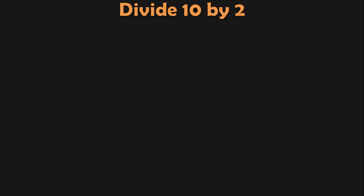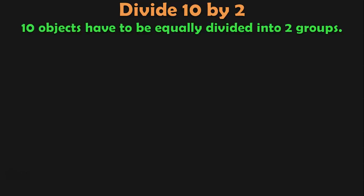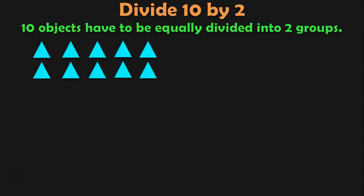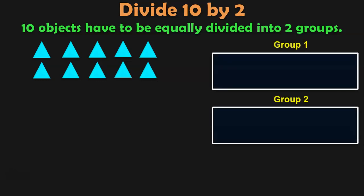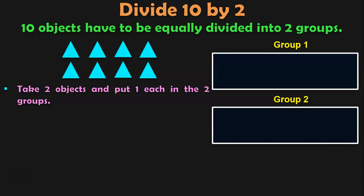Let's move on to the next topic now: dividing objects into equal groups. Divide 10 by 2. 10 objects have to be equally divided into 2 groups. Here we have 10 triangles and there are 2 groups. In the previous examples, we took each object one by one and put it in the groups respectively. Now what we are going to do is: since it is divide 10 by 2, take 2 objects and put 1 each in the 2 groups — put 1 in this group, another in the other group too.